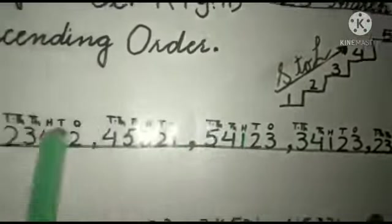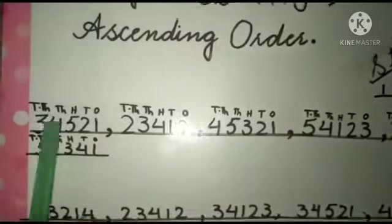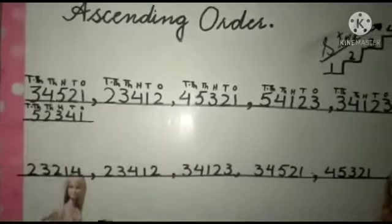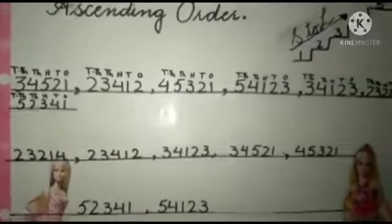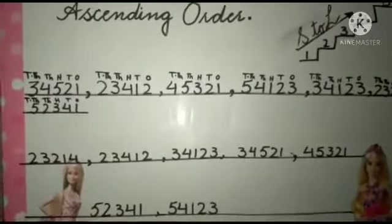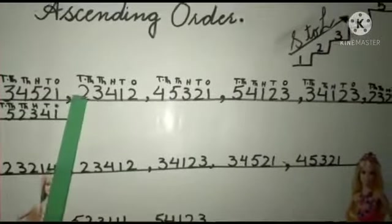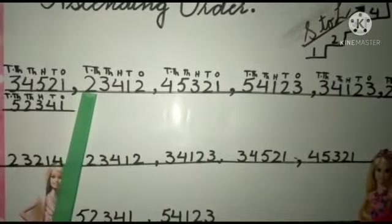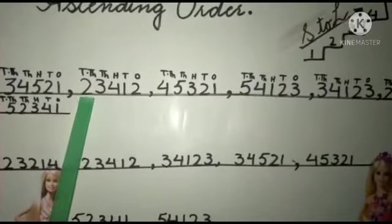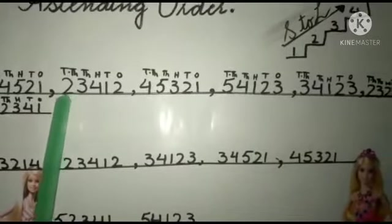You can see the numbers given over here. I have mentioned their place values at the top, so it will be easy for us to find the smallest number and to compare it with other numbers. We can see the place value of this number, 23,000 — the smallest place value number is over here.